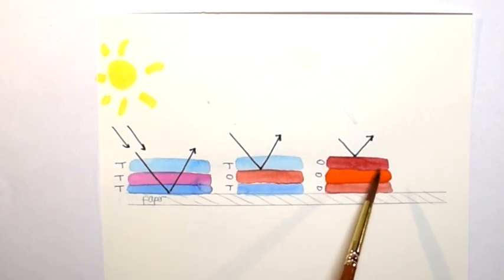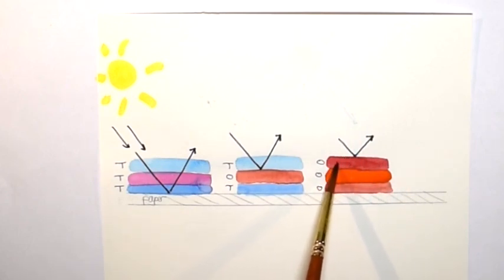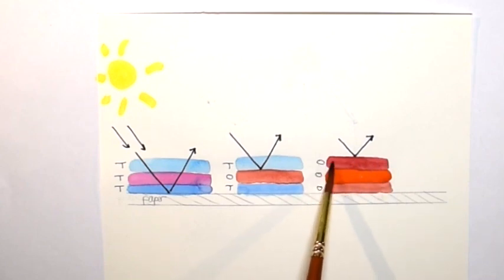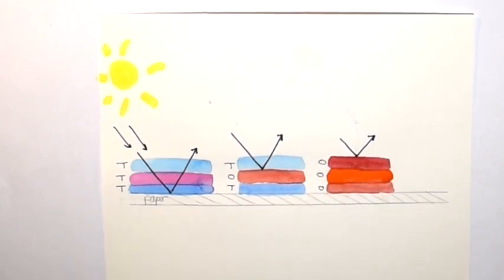In the third case, all you will see is that top layer of cadmium red deep. Everything underneath and the paper will be lost because that layer is opaque and it will hide everything that has been done before.